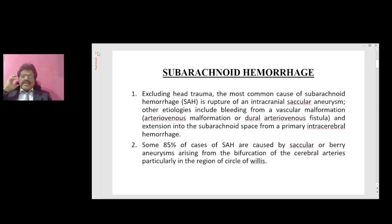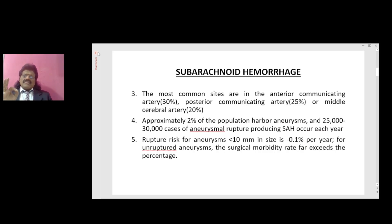Subarachnoid hemorrhage — excluding head trauma, the most common cause is rupture of an intracranial saccular aneurysm. Other etiologies include bleeding from a vascular malformation, such as an arteriovenous malformation or dural arteriovenous fistula, and extension into the subarachnoid space from a primary intracerebral hemorrhage. Some 85% of cases are caused by saccular aneurysms arising from bifurcations of cerebral arteries, particularly in the circle of Willis. The most common sites are the anterior communicating artery (30%), posterior communicating artery (25%), and middle cerebral artery (20%). Approximately 2% of the population harbor aneurysms, and 25,000 to 30,000 cases of aneurysmal rupture occur each year.